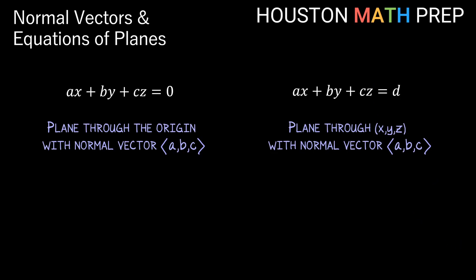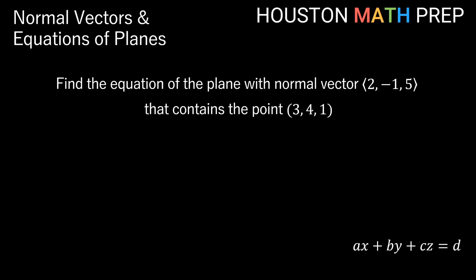Let's look at a basic example: we want to find the equation of the plane with normal vector n = (2, -1, 5) that contains the point (3, 4, 1). Without even using the point yet, the normal vector gives us the coefficients a, b, and c for the linear terms. So 2 is my a, -1 is my b, 5 is my c. My equation is going to look like 2x - y + 5z = d. We don't know d yet, and once we have d we have the entire equation of the plane finished.